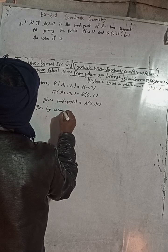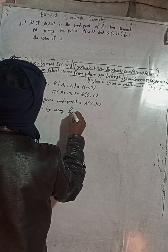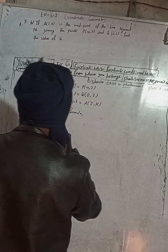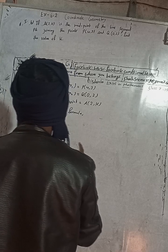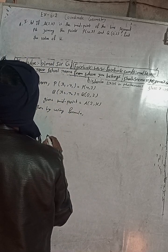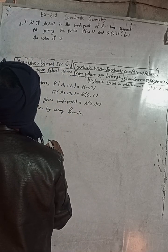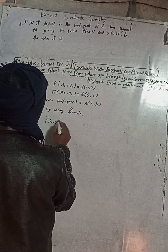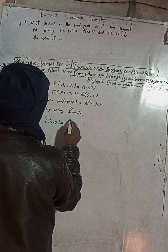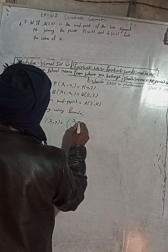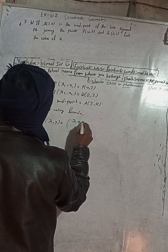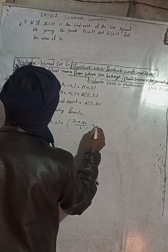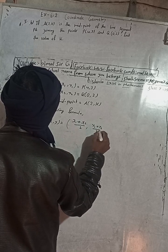By using the midpoint formula, the midpoint (x, y) is equal to (x1 + x2)/2 comma (y1 + y2)/2.